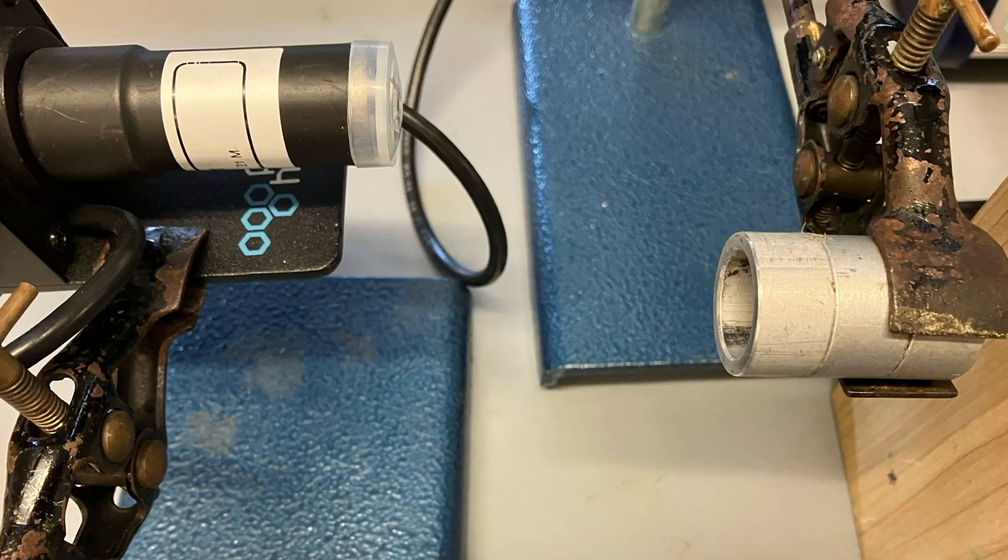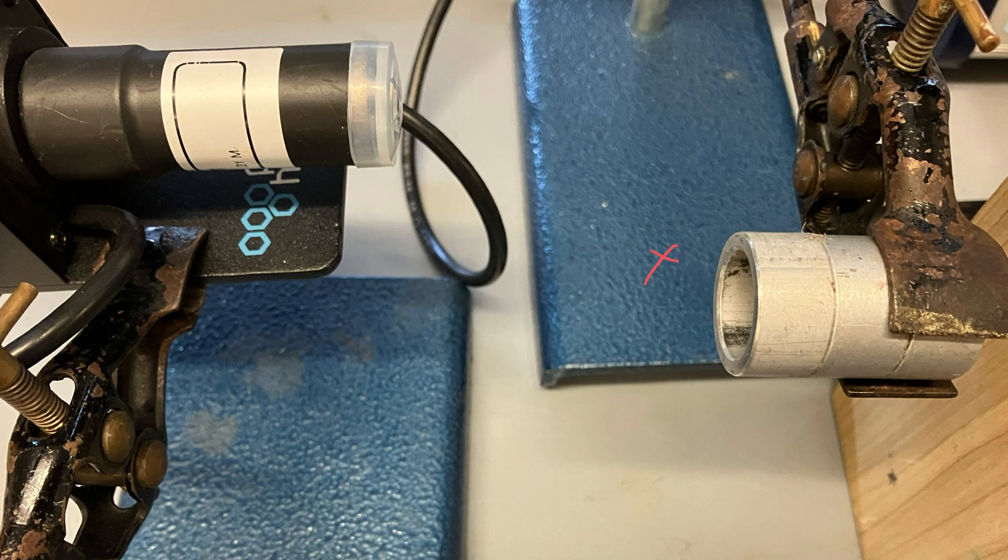Since magnetic field lines go out of the north pole of the magnet, we can represent that by drawing on some x's to represent the magnetic field going down.